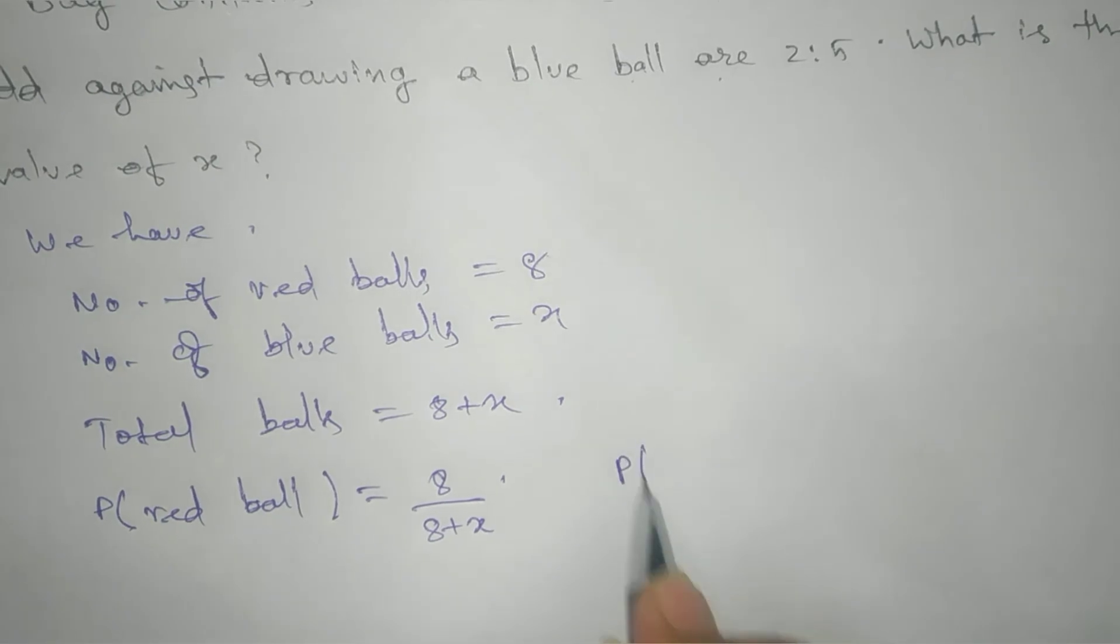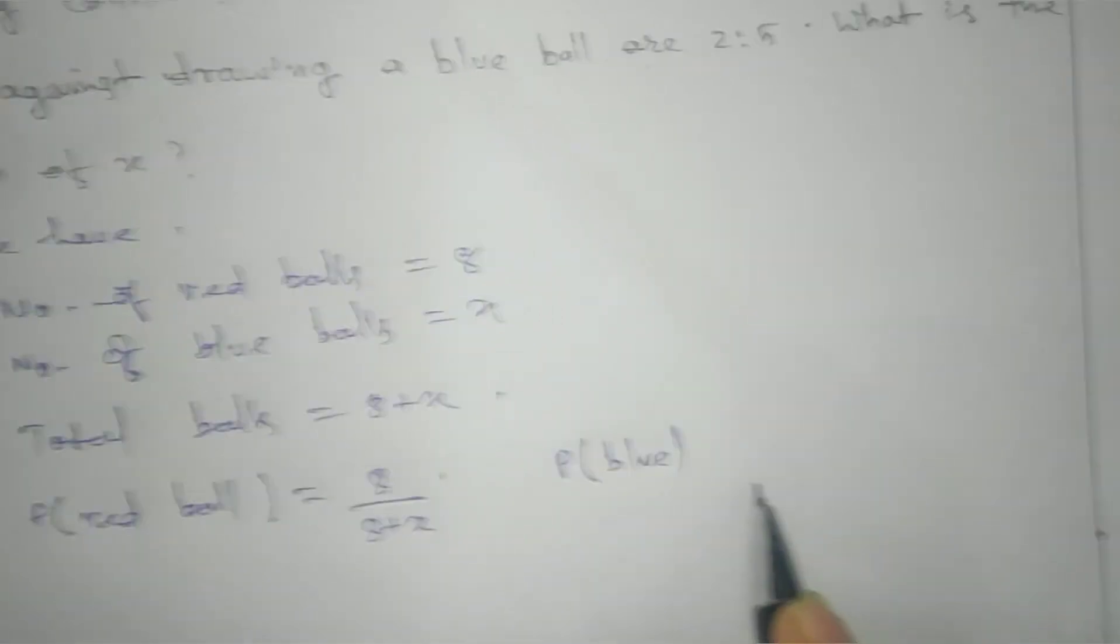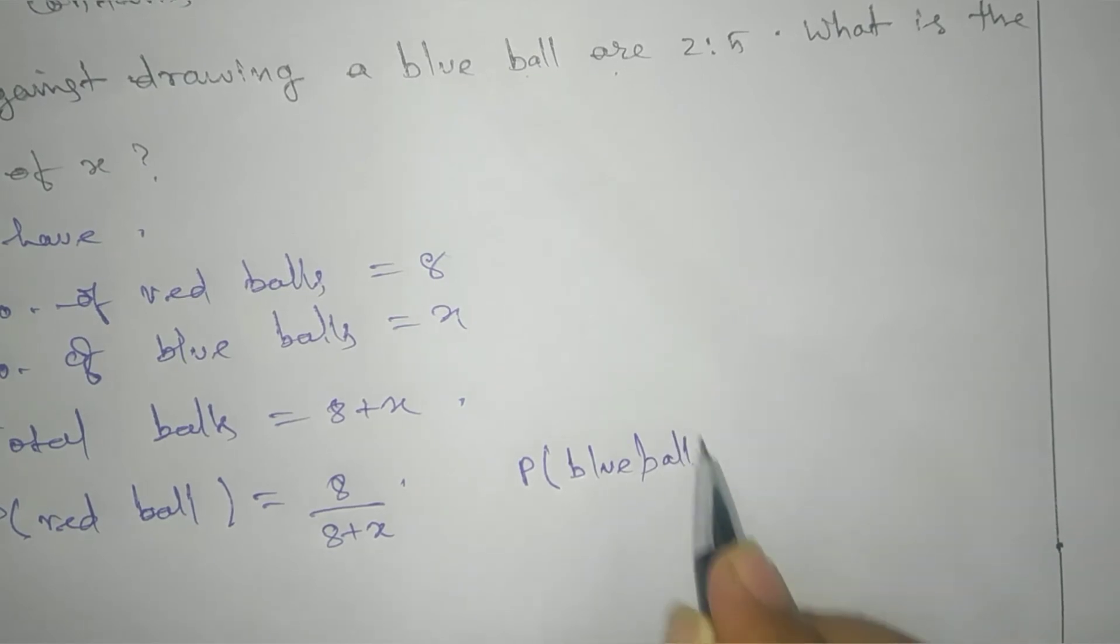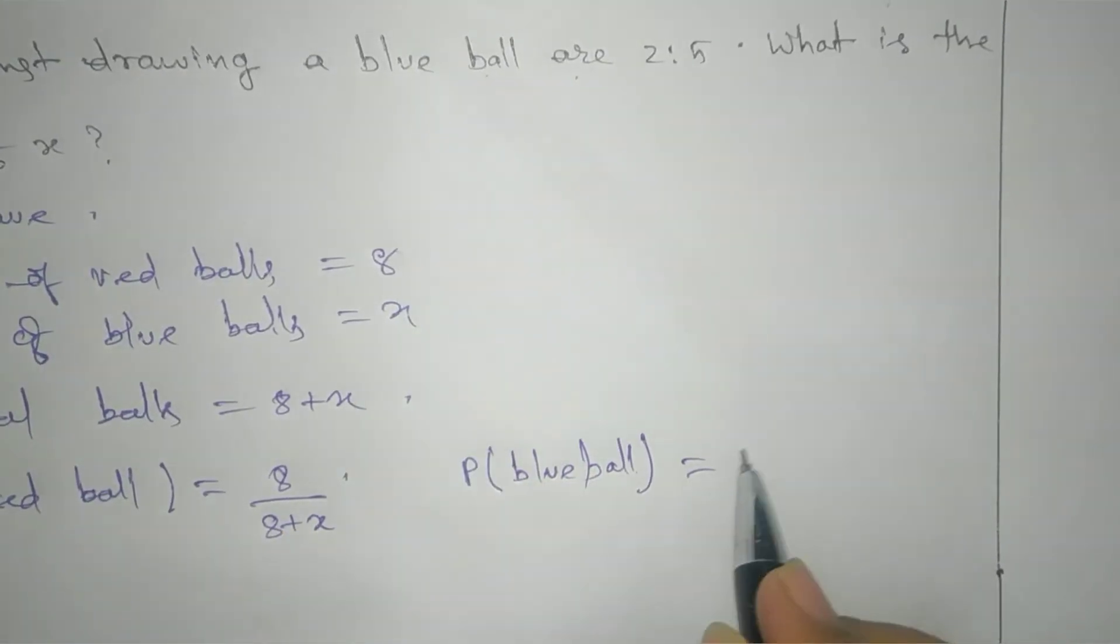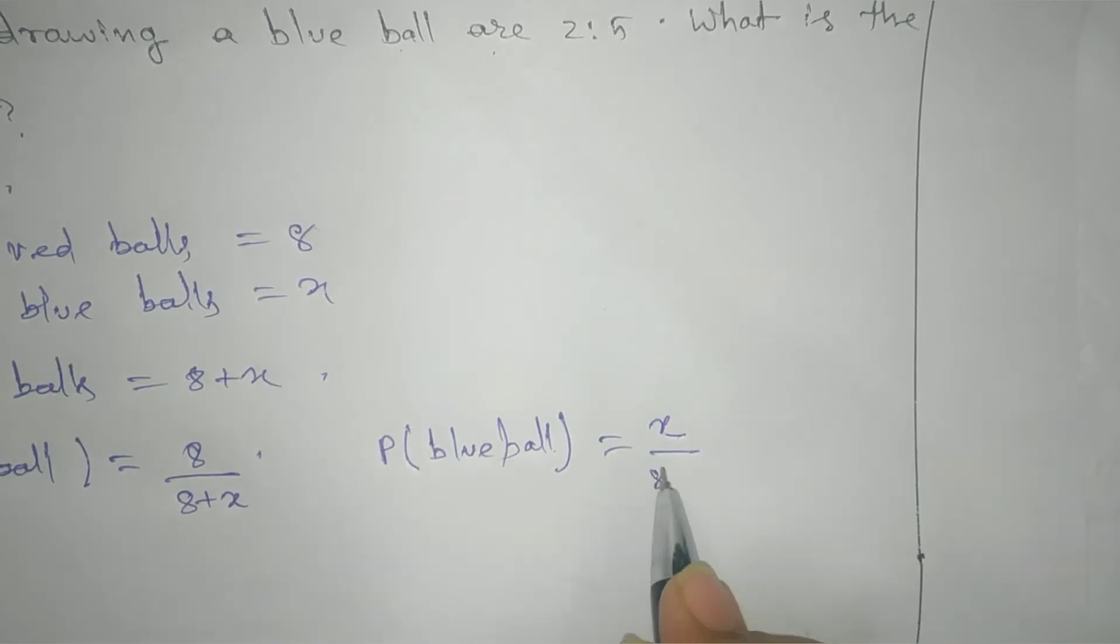And probability of drawing a blue ball is x favorable outcomes divided by total possible outcomes, which is 8 plus x.